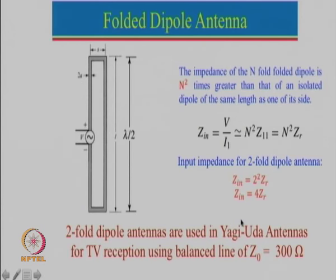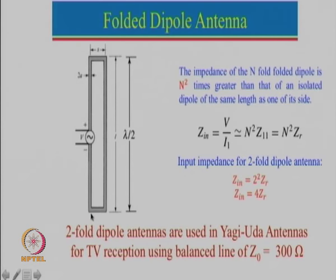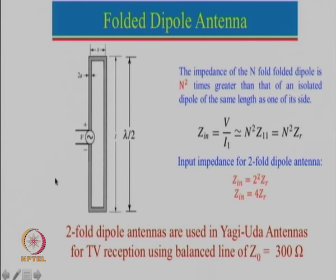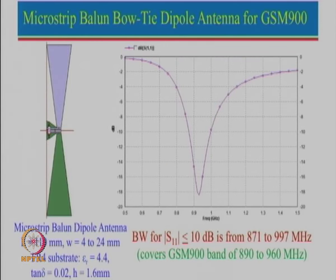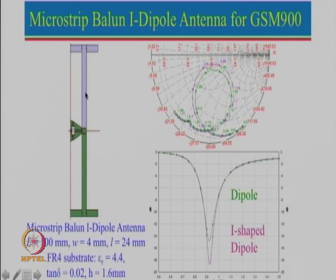Instead of using a normal dipole antenna one can also use a folded dipole antenna, which can increase the input impedance. For a simple dipole antenna fed at the center, the impedance is 73 + j42.5 ohm when the length is lambda by 2. However, the effective length will be larger than the physical length, so for a cylindrical dipole we should use the formula L + D = 0.48 lambda.